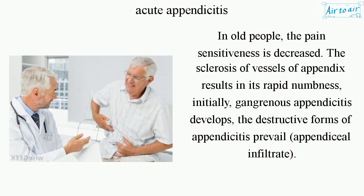In elderly people, pain sensitivity is decreased. Sclerosis of the vessels of the appendix results in its rapid necrosis. Initially, gangrenous appendicitis develops, and the destructive forms of appendicitis prevail.